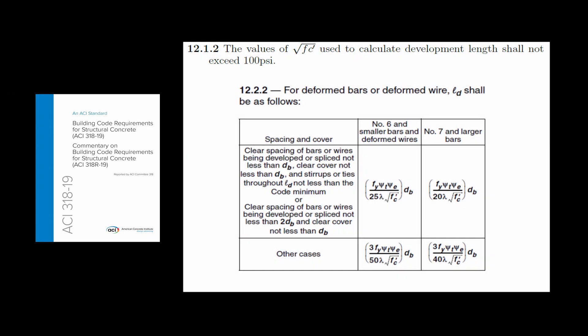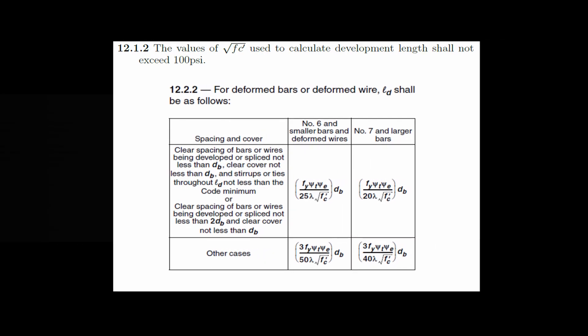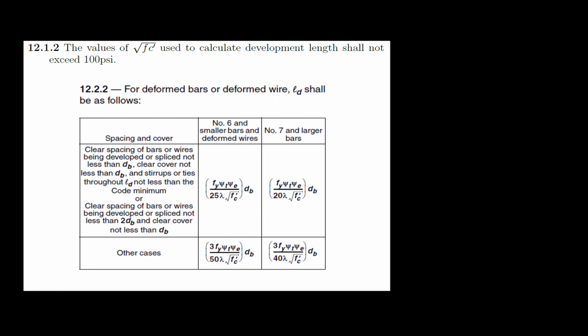Let's see what the code says, starting with ACI. Look for embedment or development length in section 12. Here I'm showing the simplified method for bars in tension. For bars in compression, the formula is simply this one.